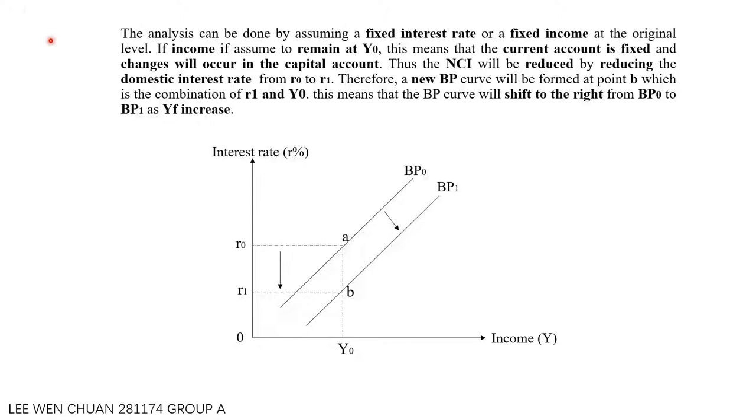If the interest rate is assumed to remain at the original level r0, this means that the capital account will remain and changes will occur in the current account, which is net exports. Thus, net exports will reduce by increasing income from Y0 to Y1. Therefore, a new BP curve will be formed at Point B, which is the combination of r0 and Y1. This means that the BP curve will shift to the right from BP0 to BP1 as foreign income increases.